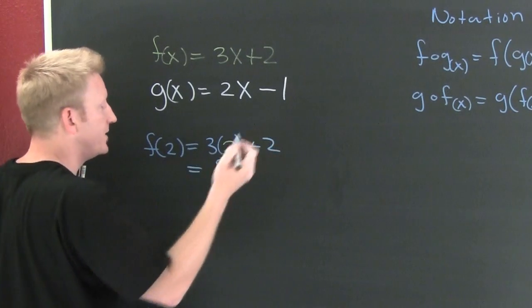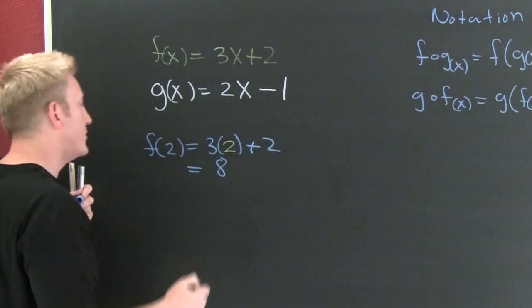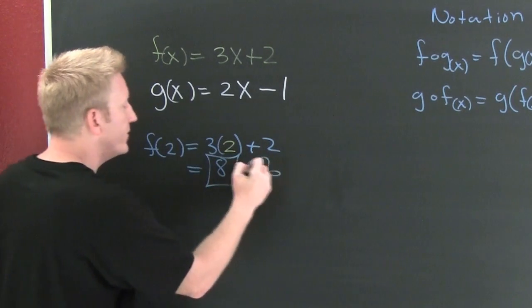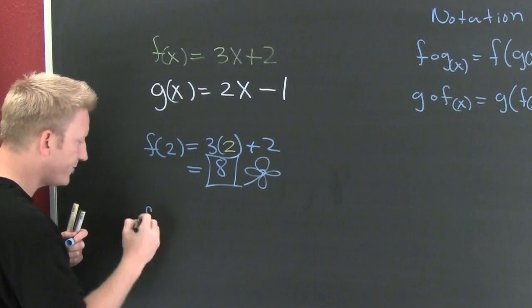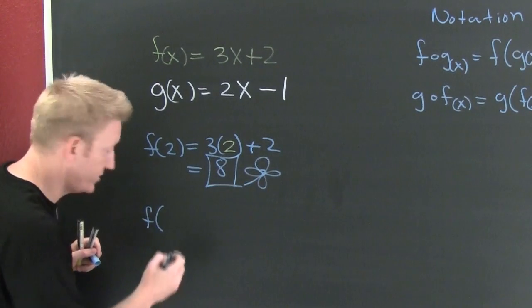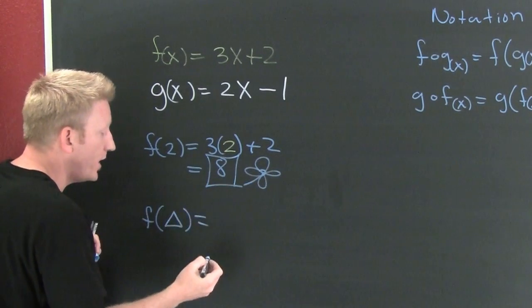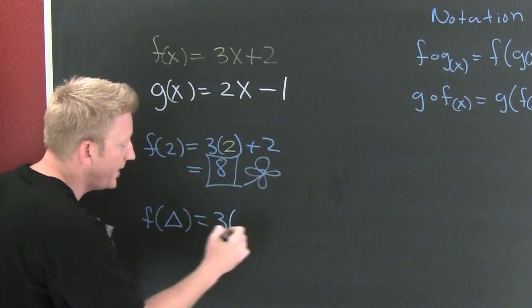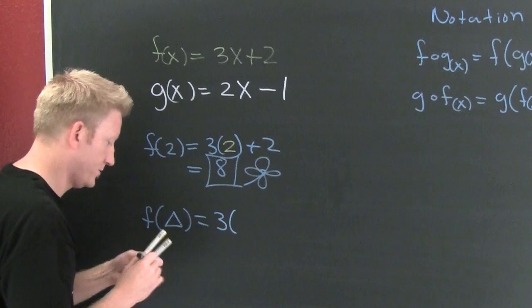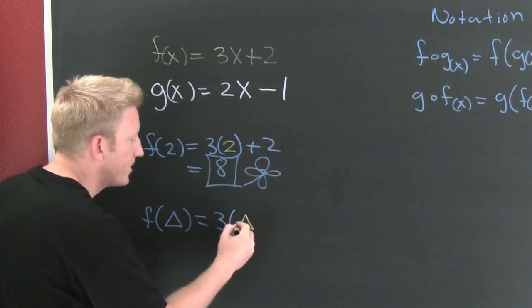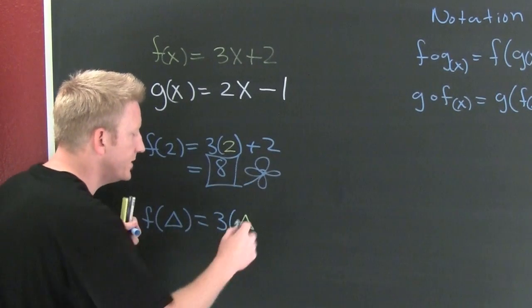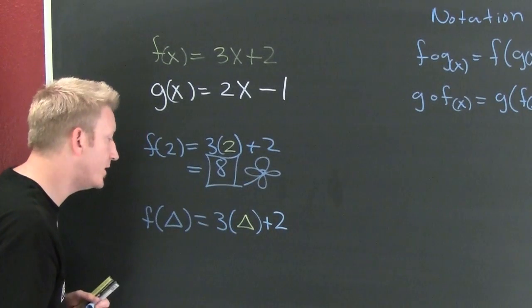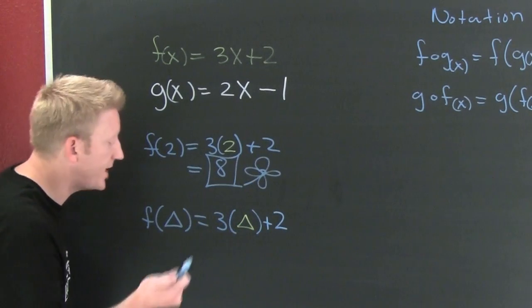But wait, there's more. What if I wanted f of triangle? That says everywhere I see an x in f, I put a triangle. This is 3 times triangle plus 2, because I just plug it in.